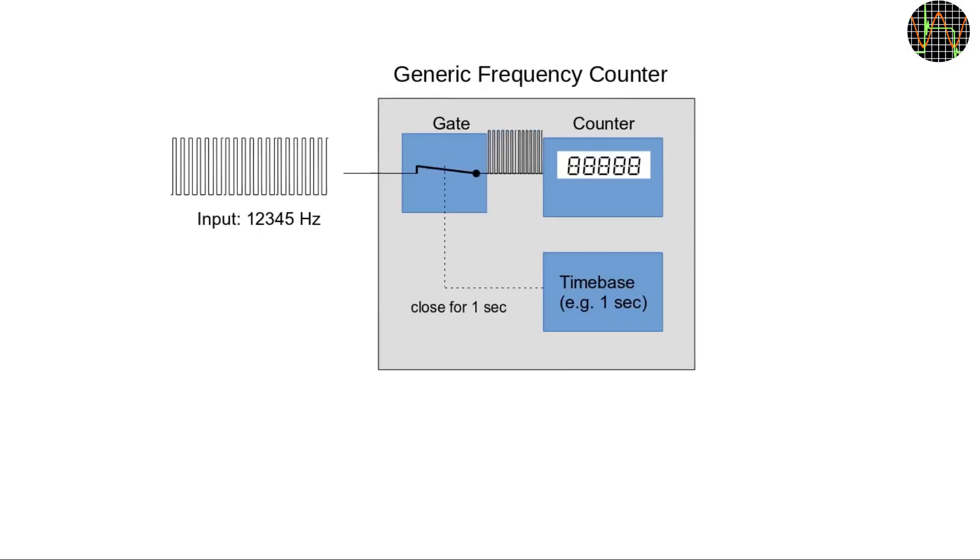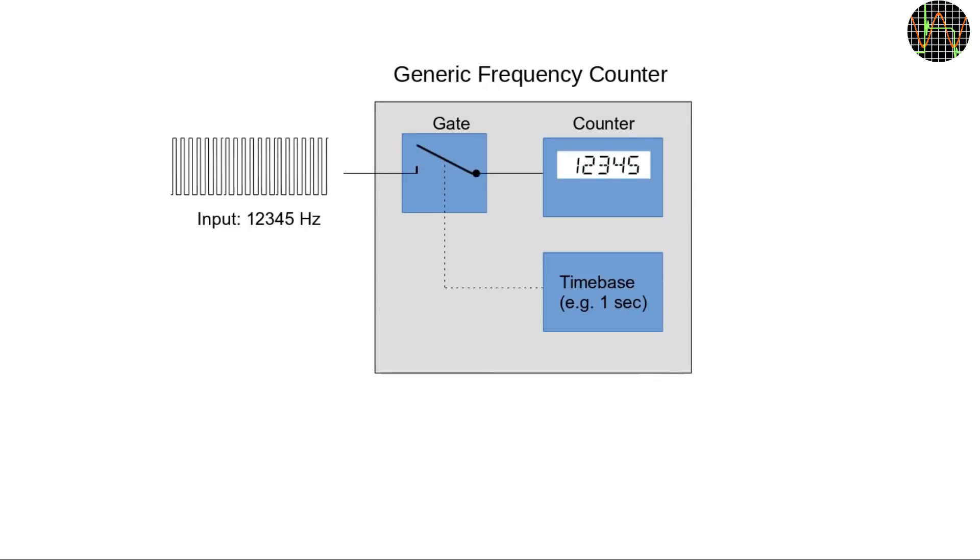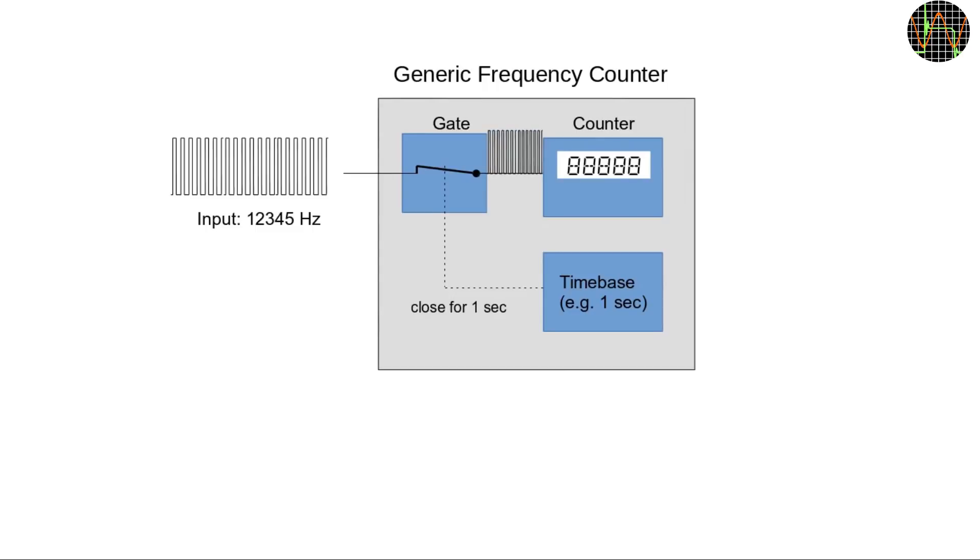In principle, all frequency counters have three components which could be implemented in hardware or software. There is the pulse counter itself and a gate that can be controlled to let the input pulses through to the counter or not. And finally, a very accurate time base that enables the gate only for a precise time period, for example 1 second. Just before doing that, the gate usually also resets the counter. In this example, the counter counted 12,345 pulses in the 1 second the gate connected it to the input. This means the frequency of the input was 12.345 kHz.